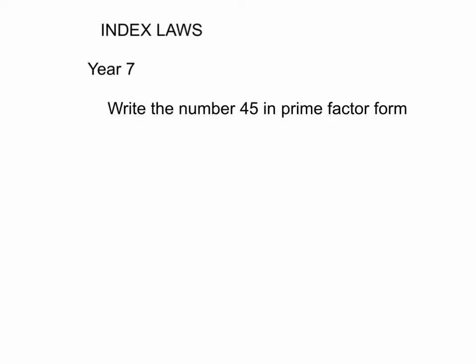So if you use a factor tree, then you start with 45 at the top, and you split it into two numbers that are factors of 45. So you can have 9 times 5 for example. Now 5 is a prime number, so you have to stop there.